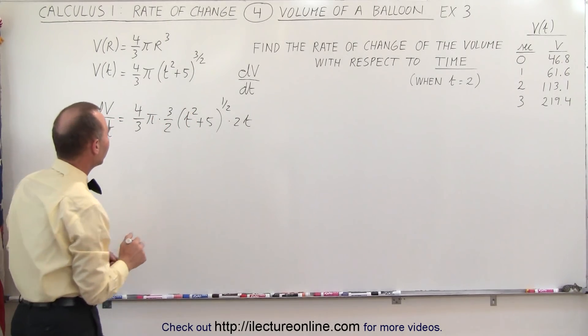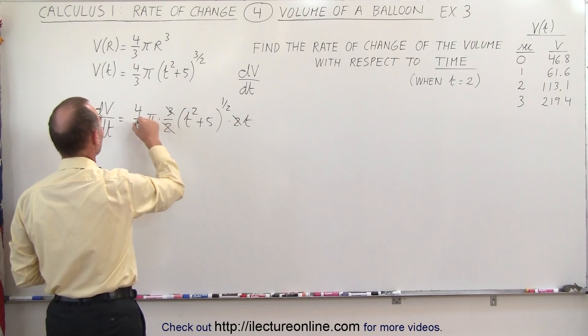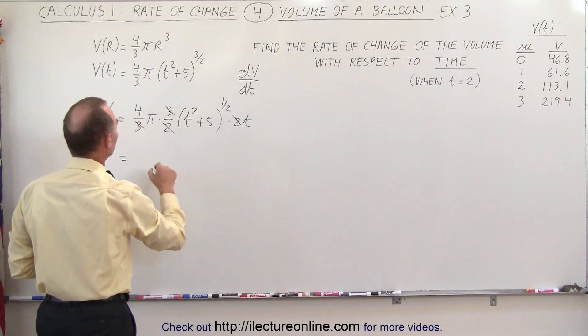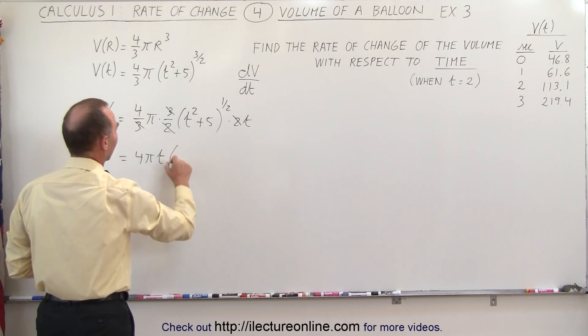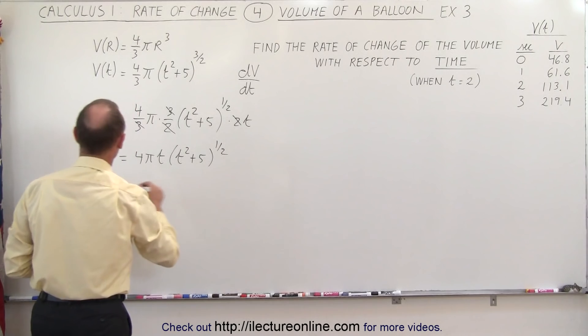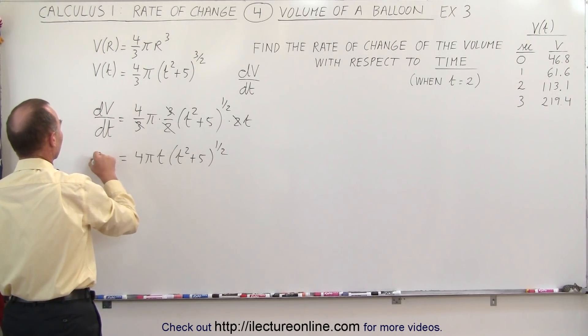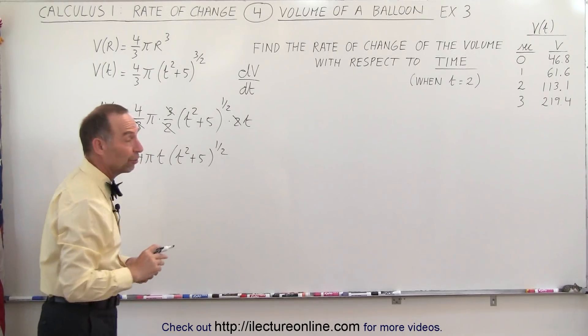Now we can simplify that. Here we have a 2 and a 2, we have a 3 and a 3, so this is equal to 4 pi t times the quantity t squared plus 5 to the 1 half power. So now we have an equation that tells us the change of the volume with respect to time is equal to this equation.